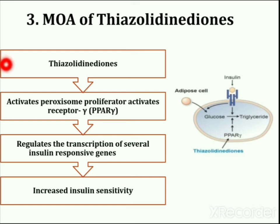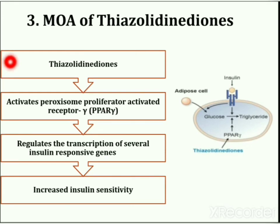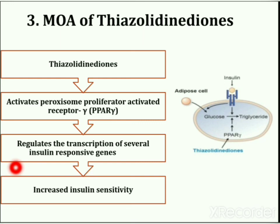Next is mode of action of thiazolidinediones. Thiazolidinediones are used for the treatment of type 2 diabetes. They bind to peroxisome proliferator activated receptor gamma in adipocytes to promote adipogenesis and fatty acid uptake in peripheral but not visceral fat. Adipogenesis is the process of formation of adipocytes, which are fat cells, from stem cells. Activation of this receptor regulates the transcription of several insulin-responsive genes, resulting in increased insulin sensitivity.